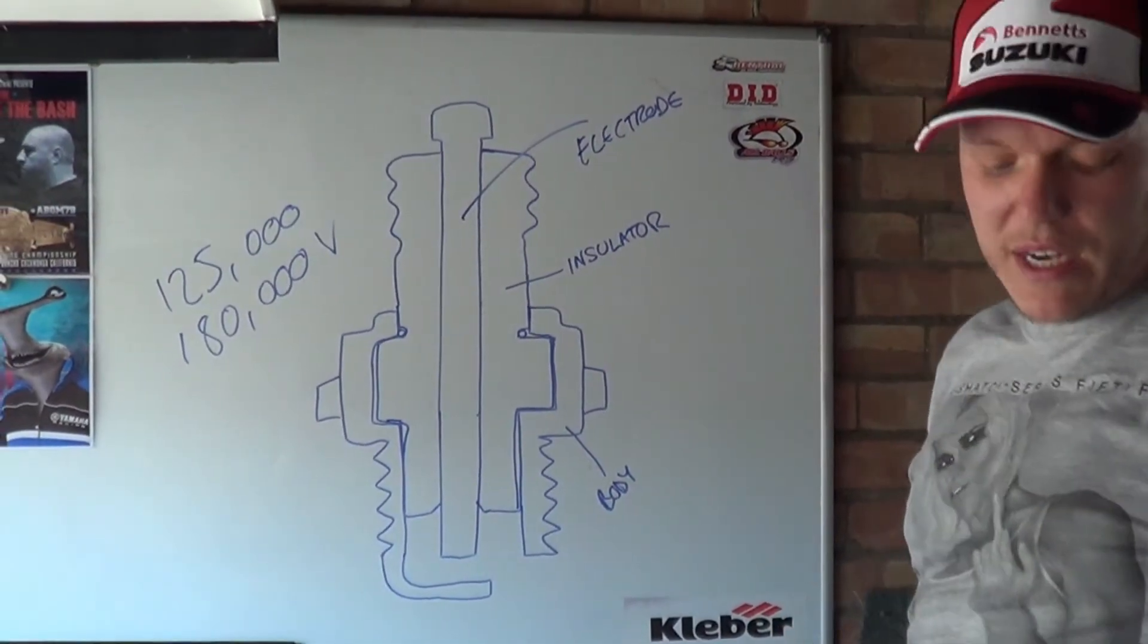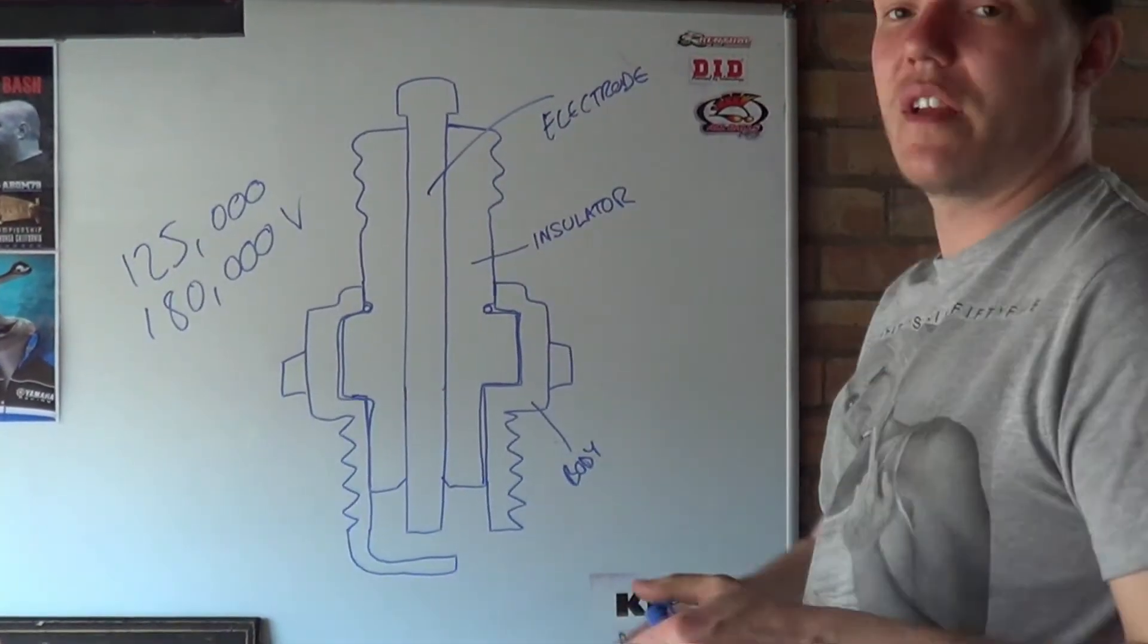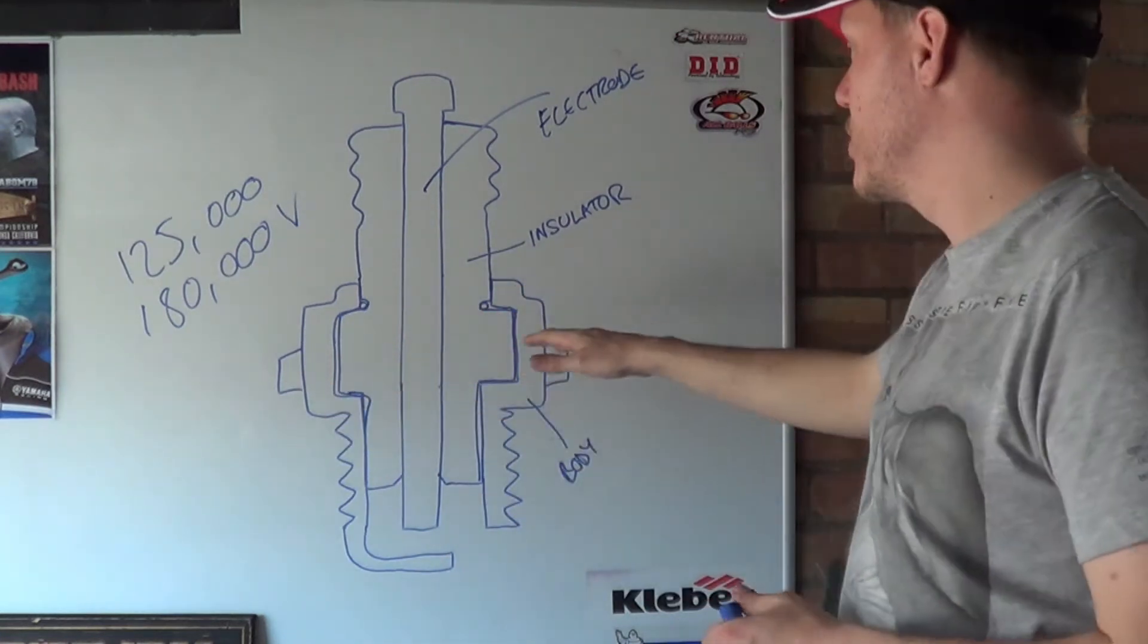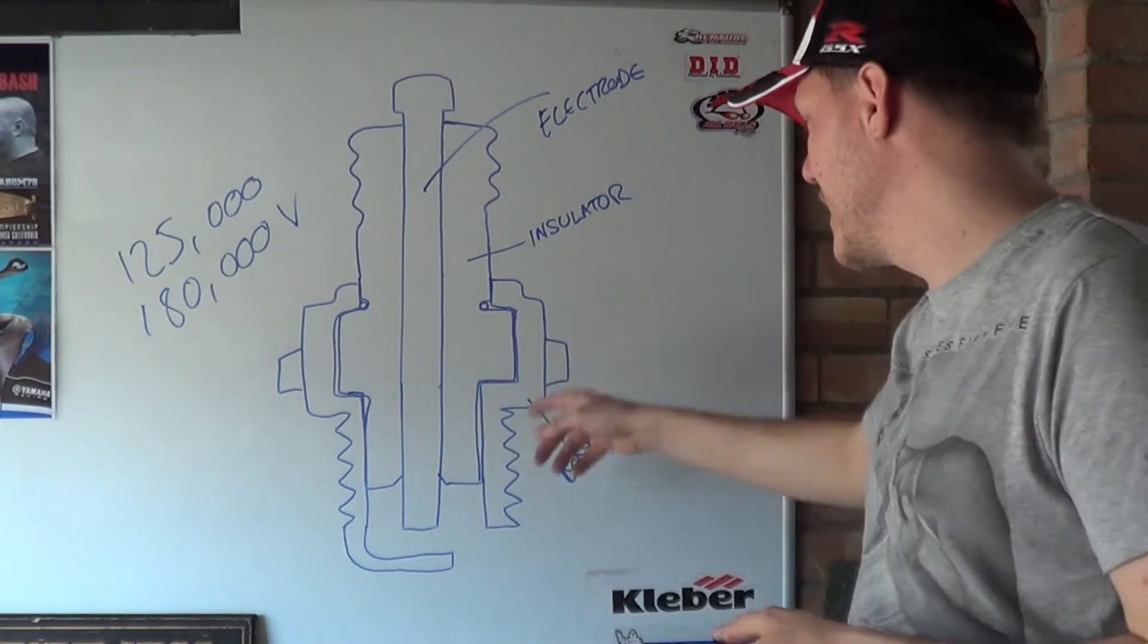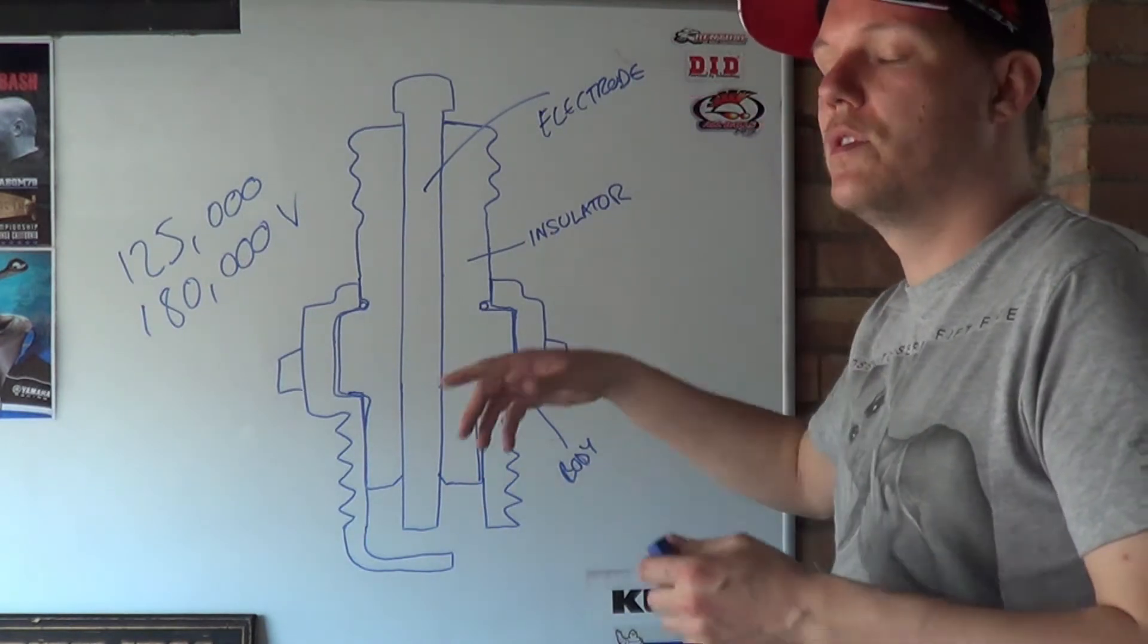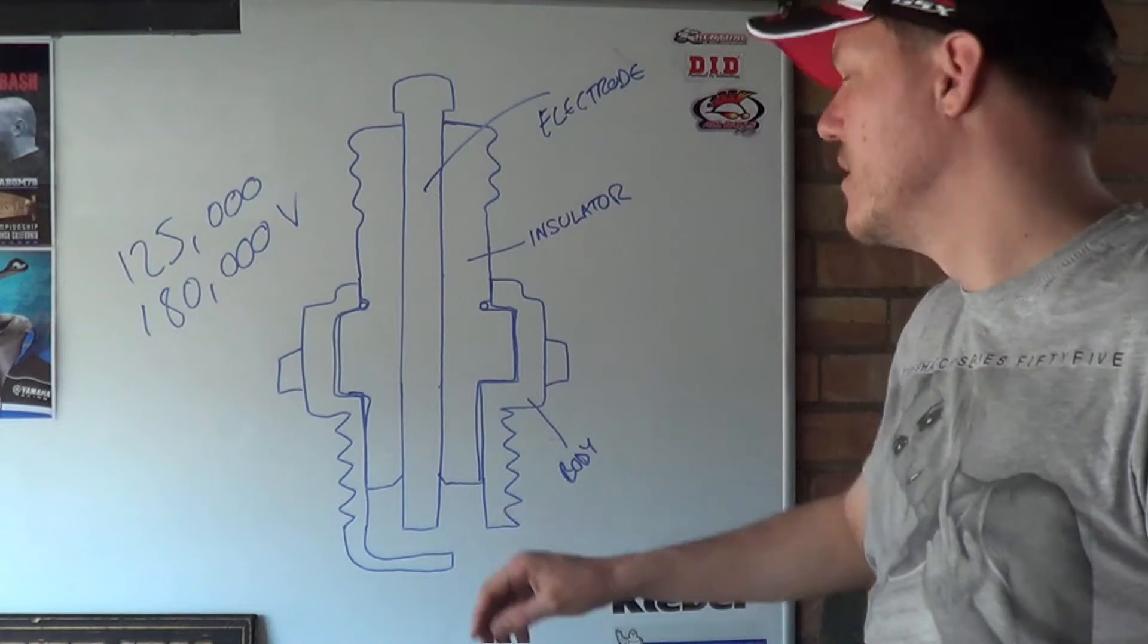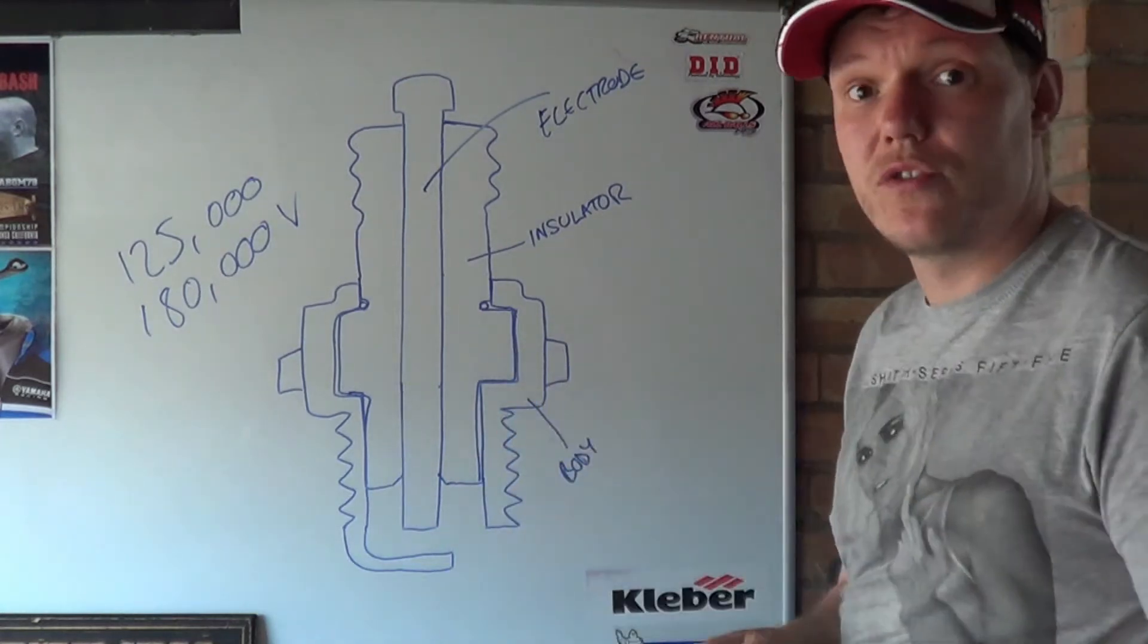So without going into voltage potentials and all the electronics of it, let's just look at it from a mechanical point of view. We know electricity goes down and it jumps, but let's look at material choice and construction. So you have your body which has your hex on it so you can wind it down into its thread. These threads are usually standard imperial or metric sizes, they're all common threads like M10s. They're usually fine pitch so it's UNF or fine pitch metric.